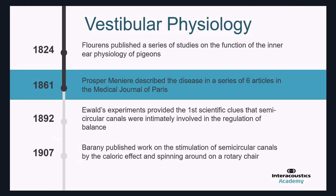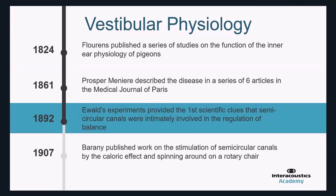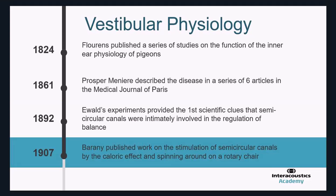Prosper Ménière is credited as one of the first physicians who moved the idea of true rotatory vertigo experienced by the patient from being predominantly a brain disorder — as reported in the literature back in the 1900s — to being something possibly implicating the ear. His six groundbreaking articles published in the Paris medical journal in 1861 — sadly near the very end of his life, as he passed away in 1862 — gave us the framework for what we now call Ménière's disease.